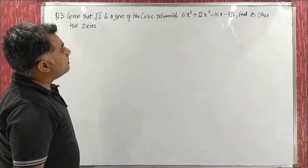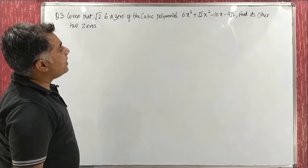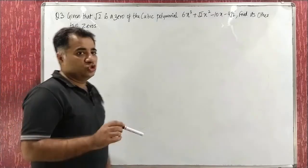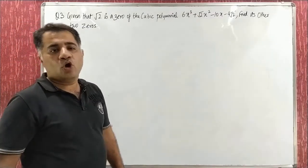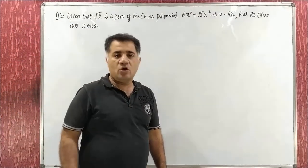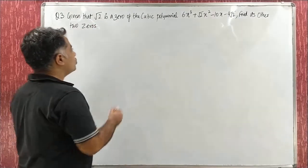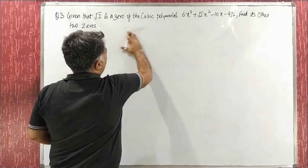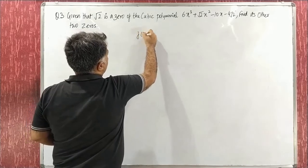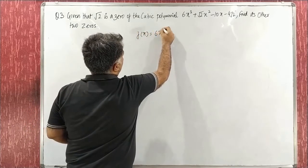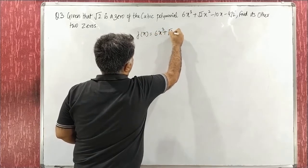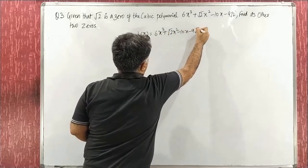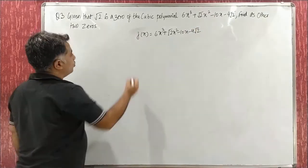6x³ + √2x² − 10x − 4√2, find its other two zeros. This is a cubic polynomial where one zero is already given and we need to find the remaining two zeros. f(x) is given as 6x³ + √2x² − 10x − 4√2. One zero given is √2.